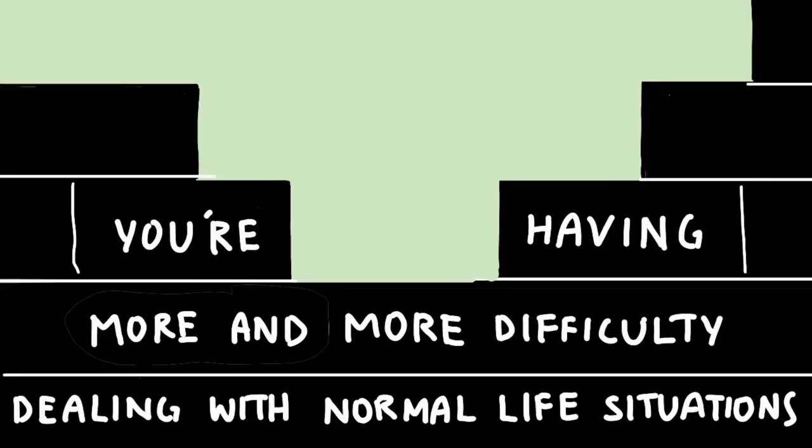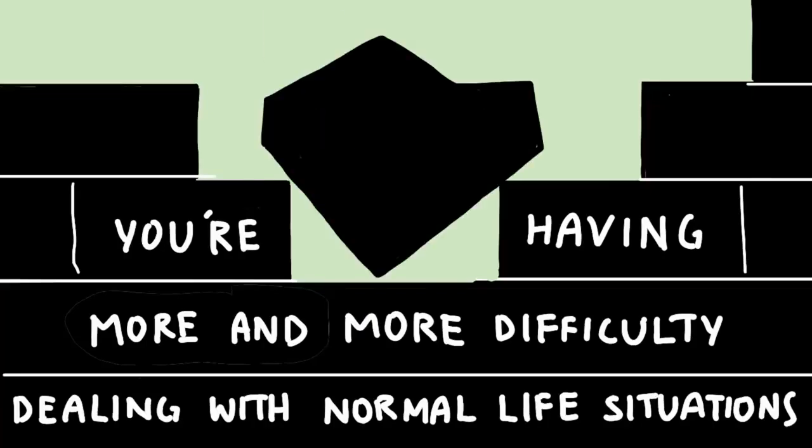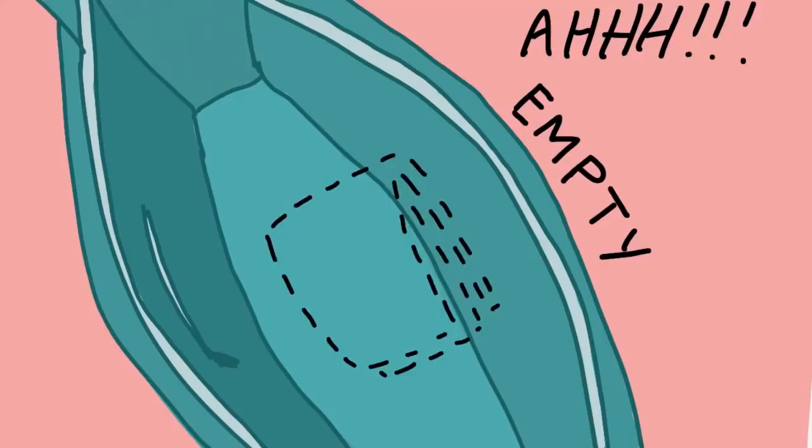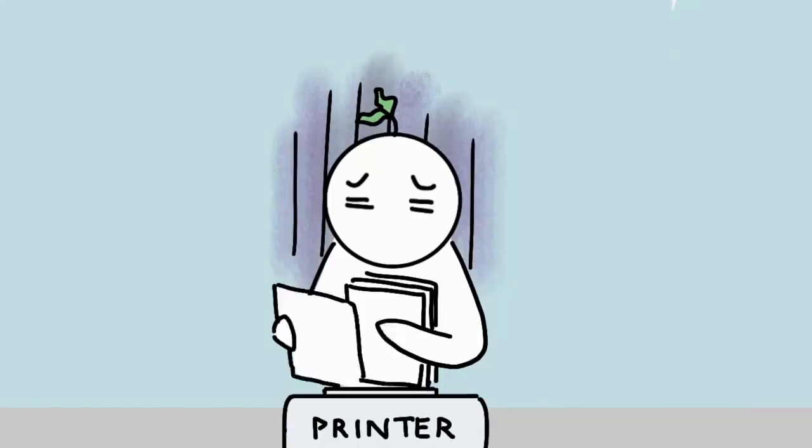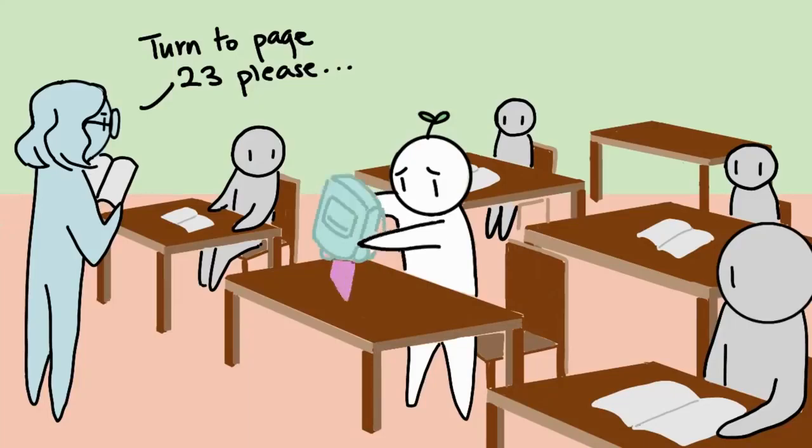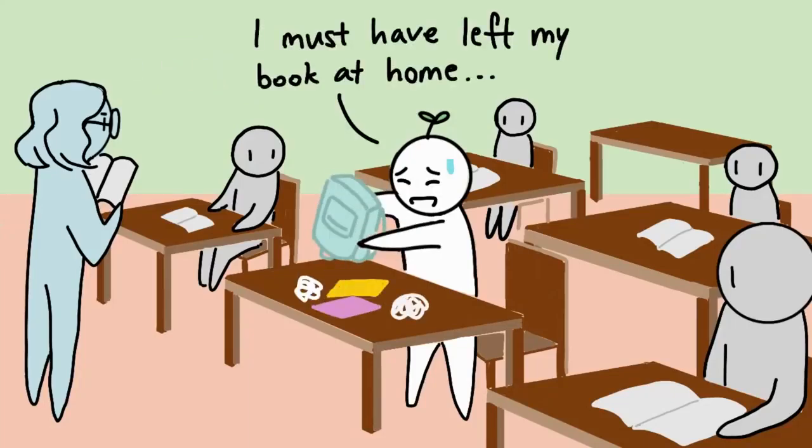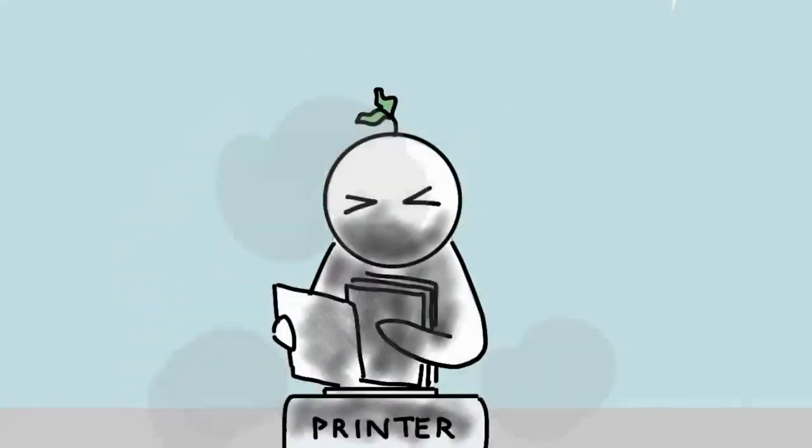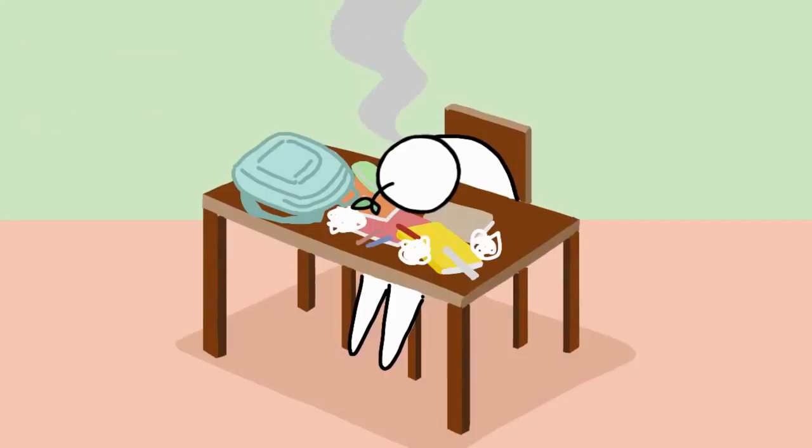Number 6: You're having more and more difficulty dealing with normal life situations. Have you ever gone through a time in your life when nothing seemed to go right and you just couldn't deal? The Australian Department of Health stated a rough patch that you just can't get past, one that hurts your ability to function for more than two weeks to two months, may be a sign of depression or anxiety. A major sign that what you're experiencing is more than just a rough patch is when you have a hard time functioning in normal situations for several weeks, according to Mental Health America.